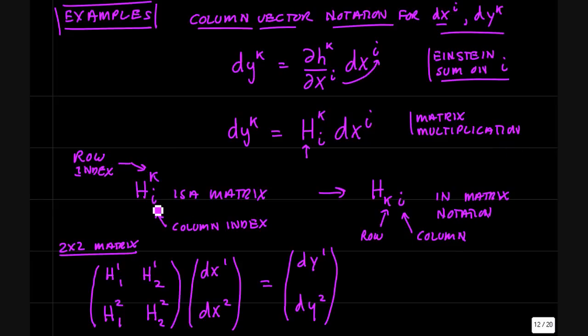Now we have this a little bit funny notation. Our matrix has an upstairs index and a downstairs index. The index upstairs is the row index of the matrix and the downstairs is the column index. So in standard matrix notation where you have h_ki, the rows come first and then the columns - row k and column i.